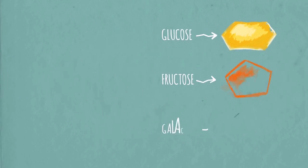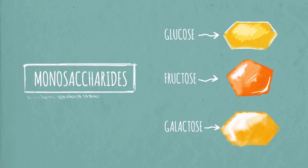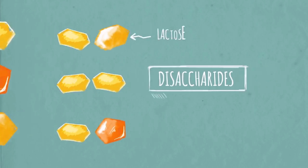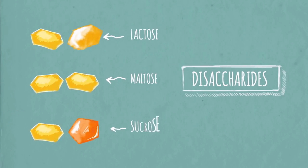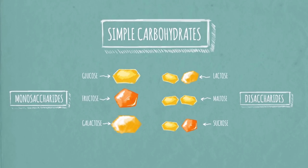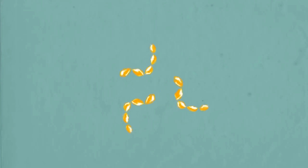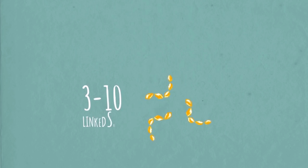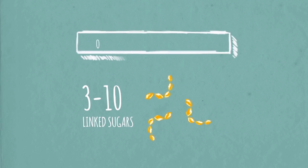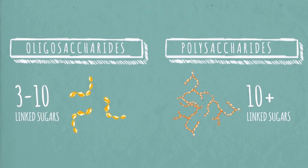Carbohydrates can be simple or complex, depende sa structure niya. Ito ang simple sugar, or yung tinatawag nating monosaccharide: glucose, fructose, and galactose — lahat ito ay simple sugar. Pag pinagsama natin ang dalawa, makakabuo tayo ng tinatawag na disaccharide: lactose, maltose, or sucrose. Yung complex carbohydrates naman, kapag meron tayong 3 or more simple sugar na pinagsama — tulad ng 3 hanggang 10, ay oligosaccharide — at ang more than 10 naman, ang polysaccharides.